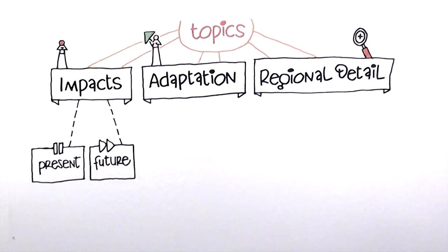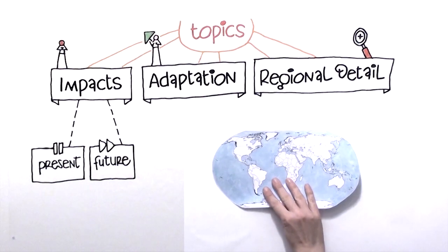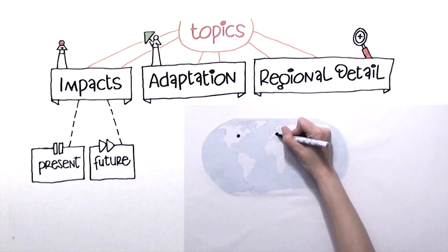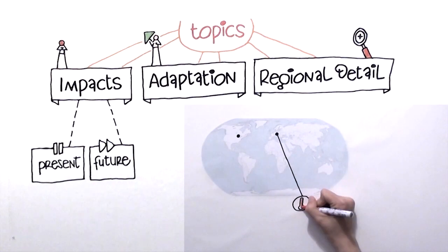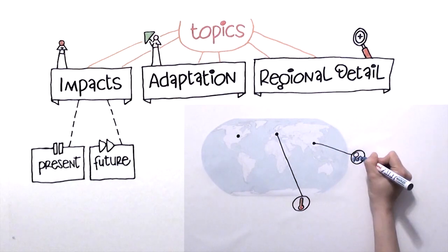We've got two volumes, one looking at the overall issues, the global issues, and one looking region by region at how climate change is affecting different parts of the world.